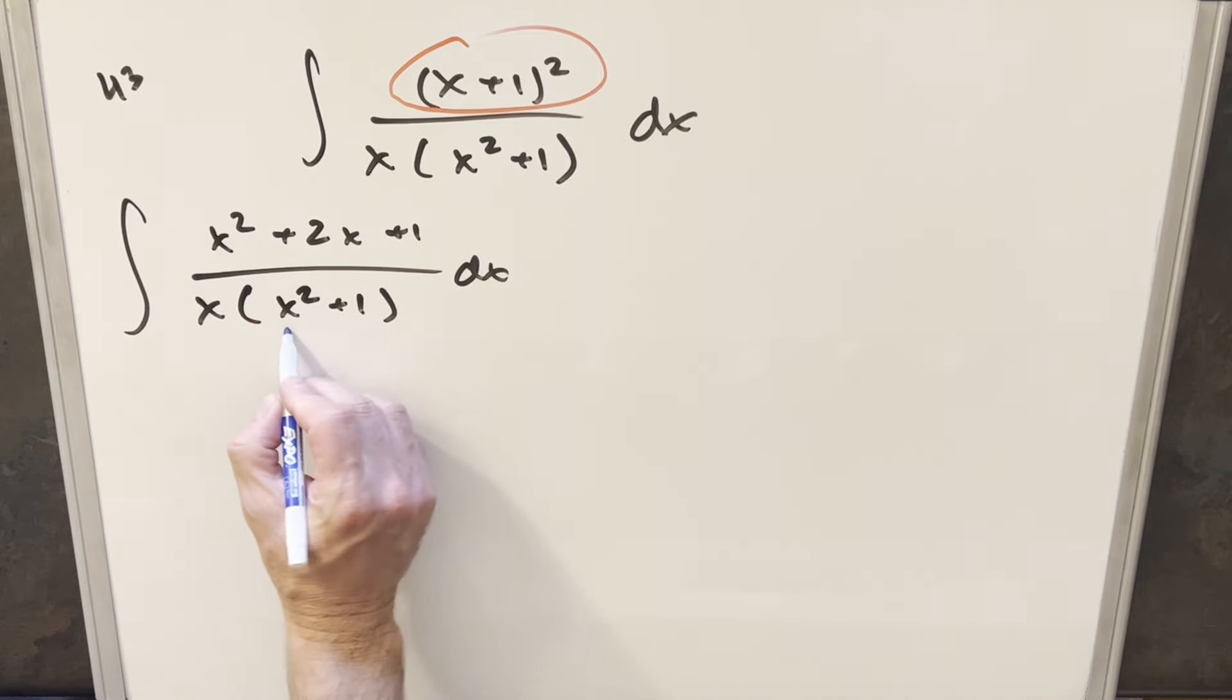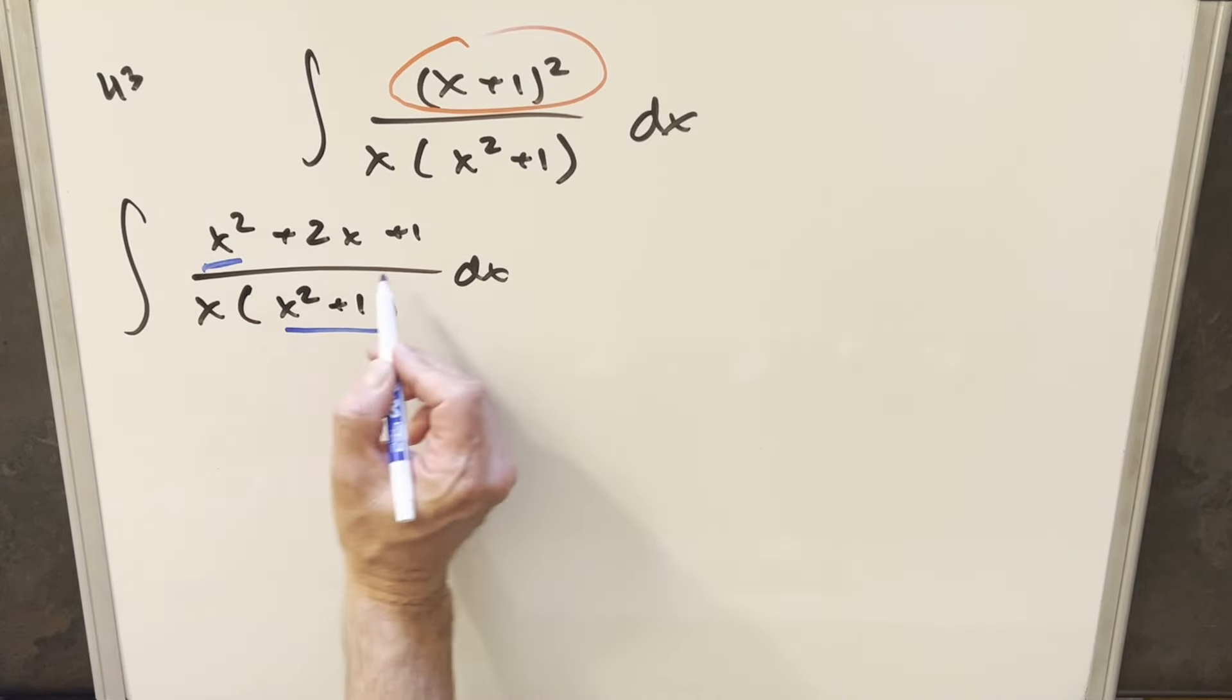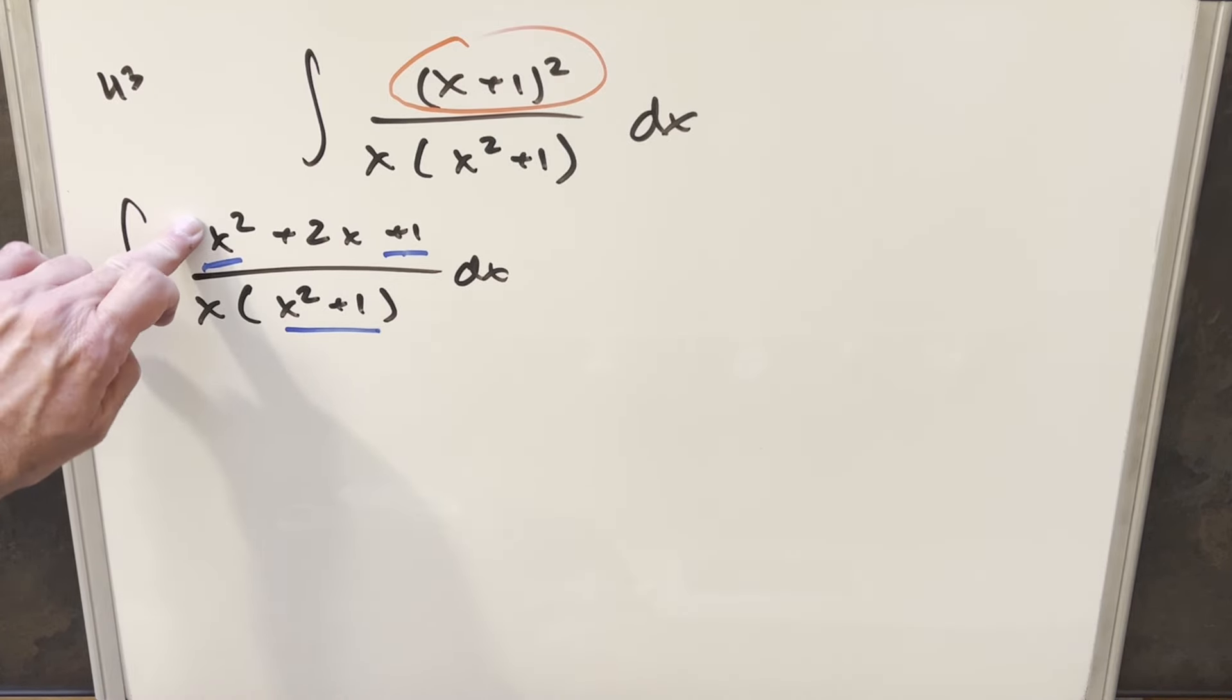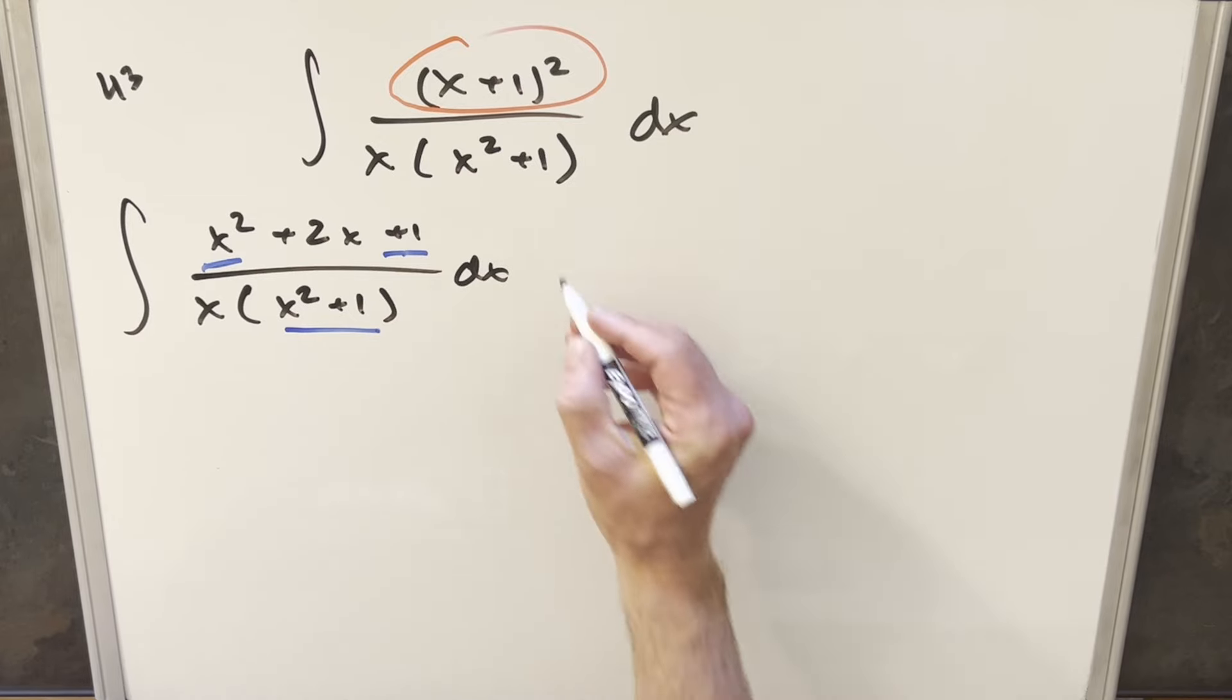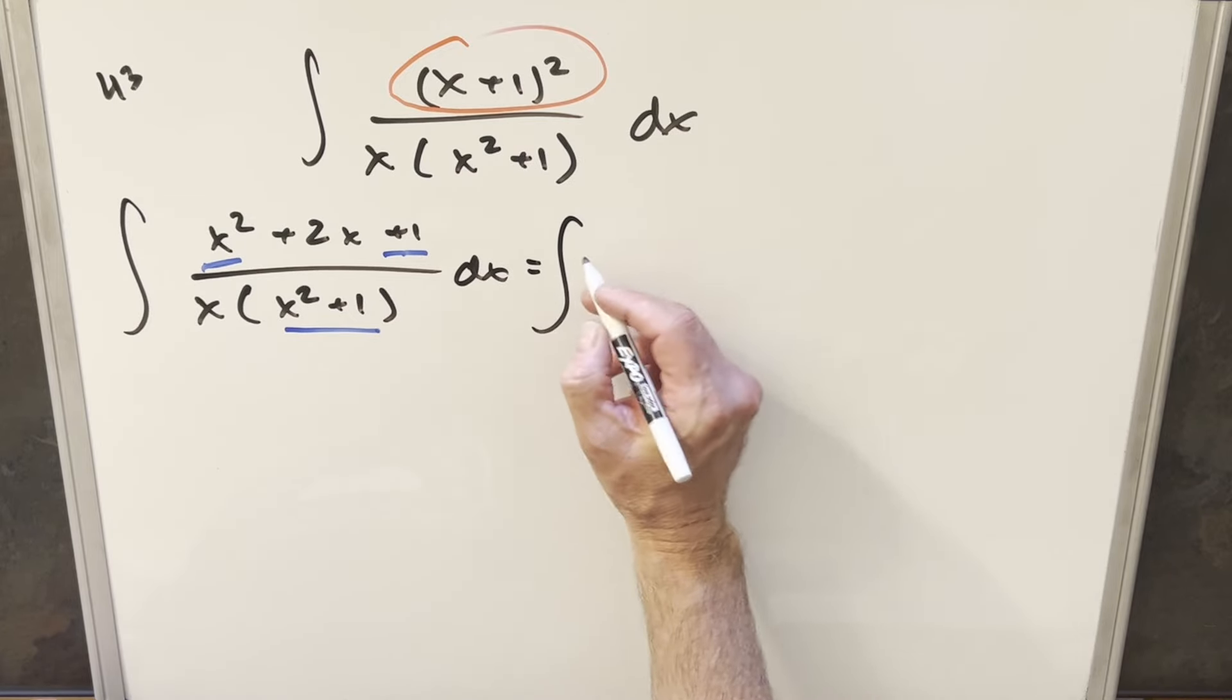And then the thing I noticed is we have x²+1 here, but we also have it here just out of order. So that tells me that what we can do is if we split this up into two integrals using this x²+1, we're going to get cancellation. Let's see how this is going to work.